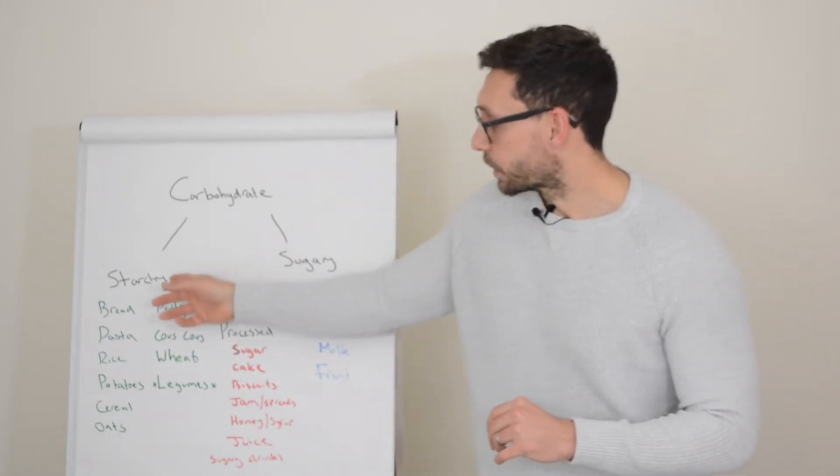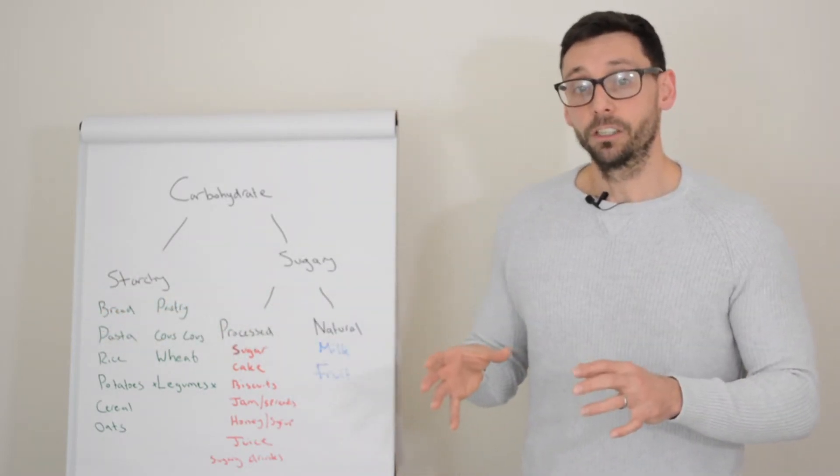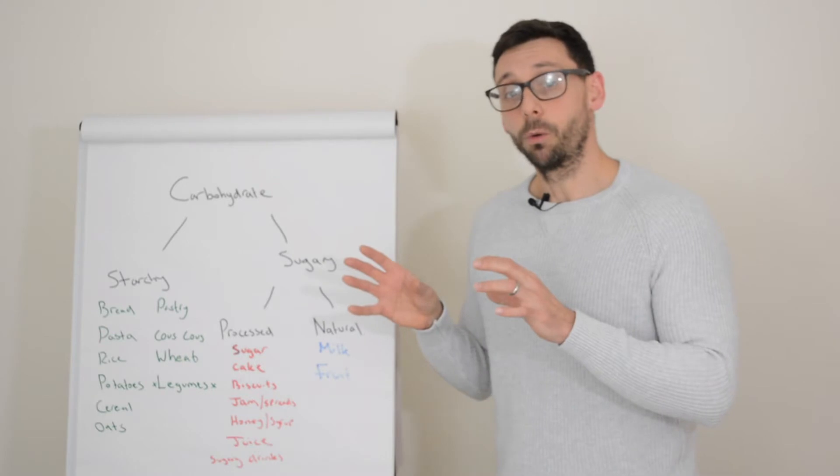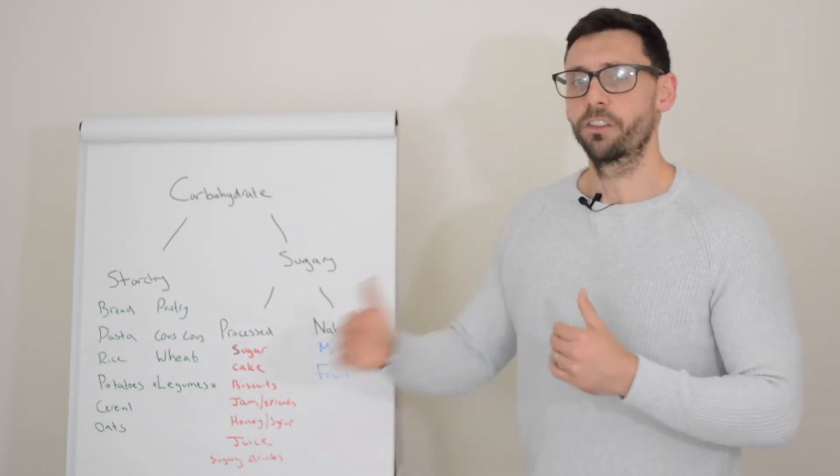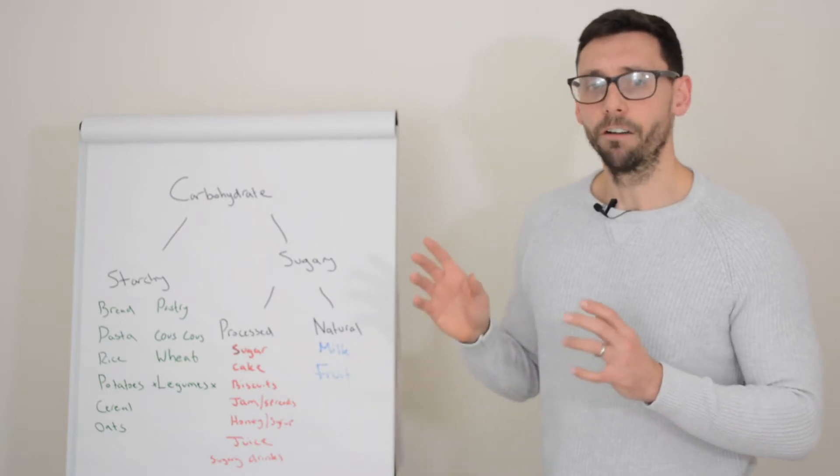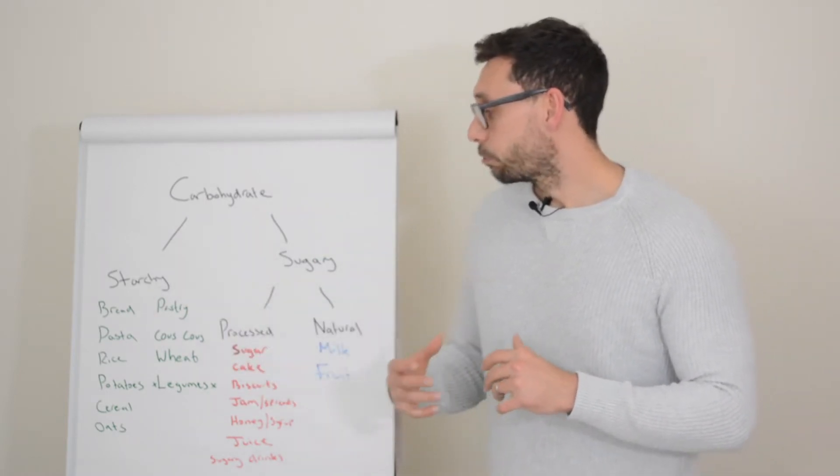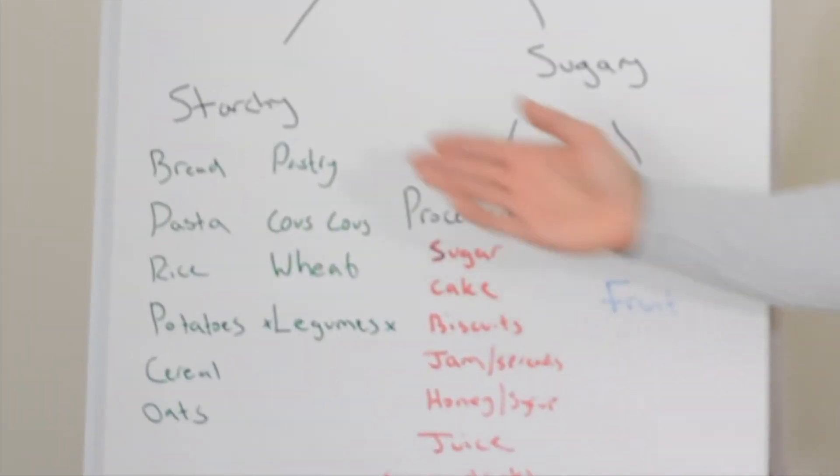So just looking at the starchy foods then. Starchy foods do affect your blood glucose levels and as I said will likely require some rapid insulin. When we're talking about starchy foods we're really talking about foods like bread, pasta, rice, potatoes, cereals, oats, any pastry, couscous, breadcrumbs, wheat based foods, and also legumes.